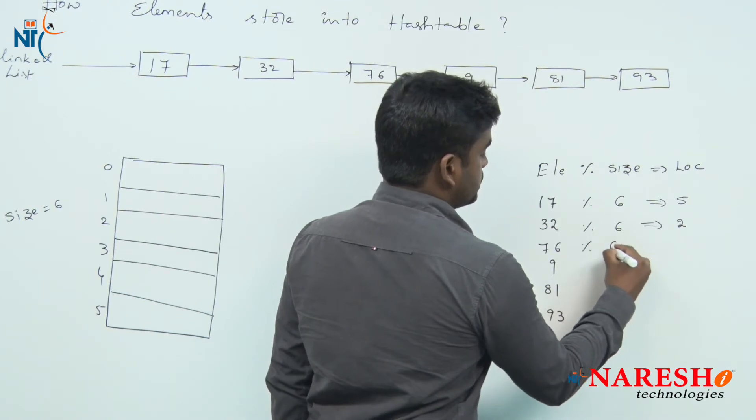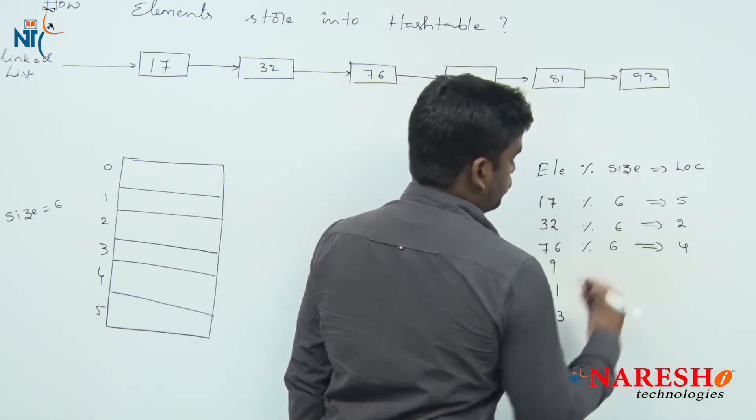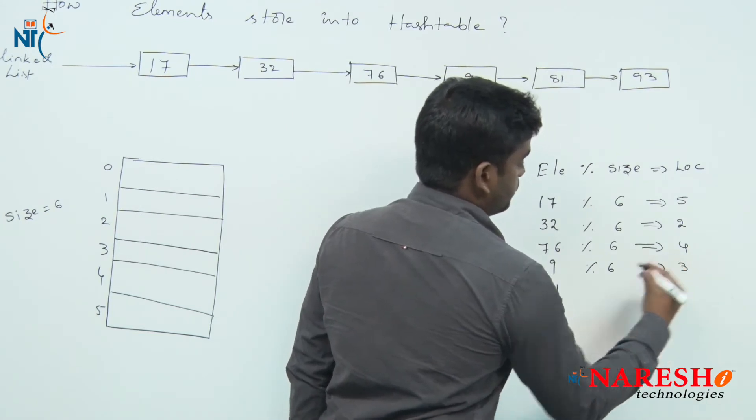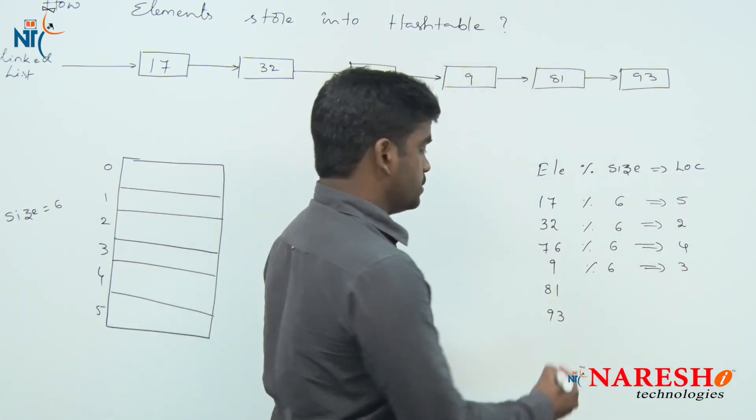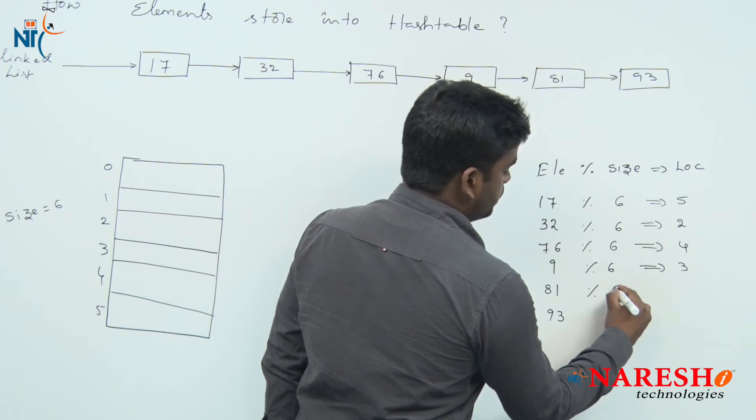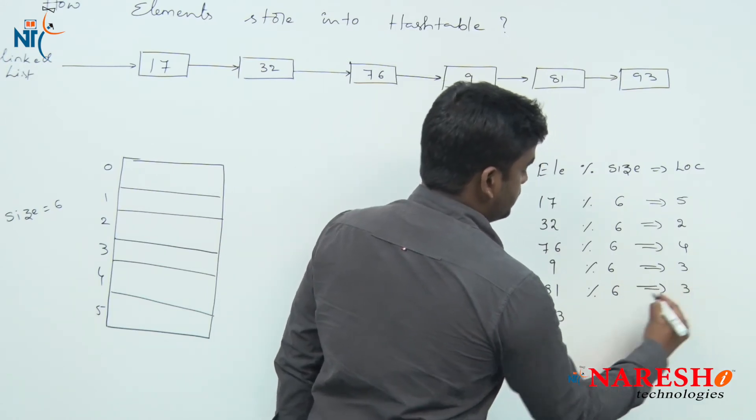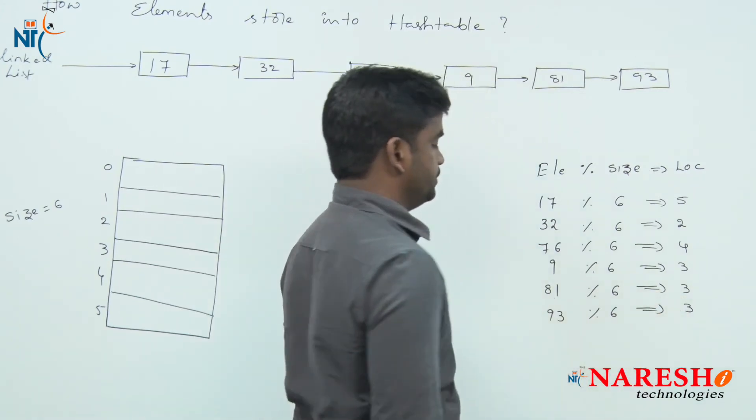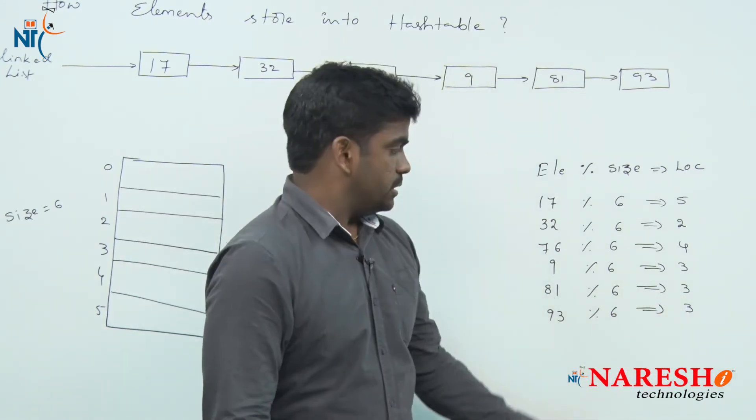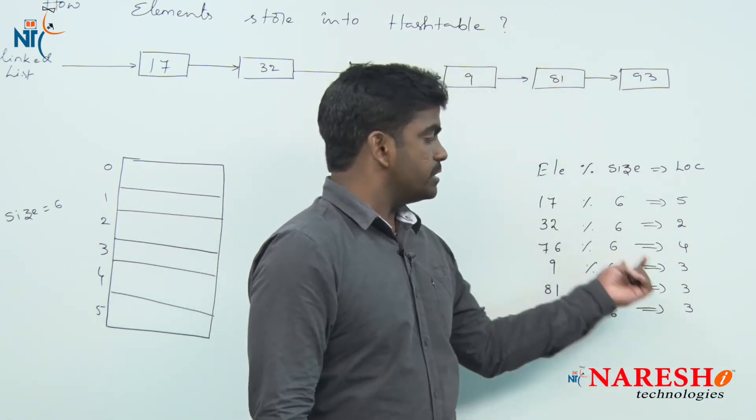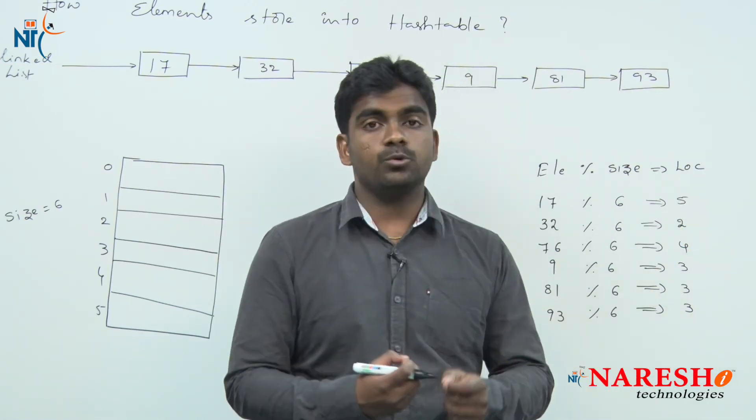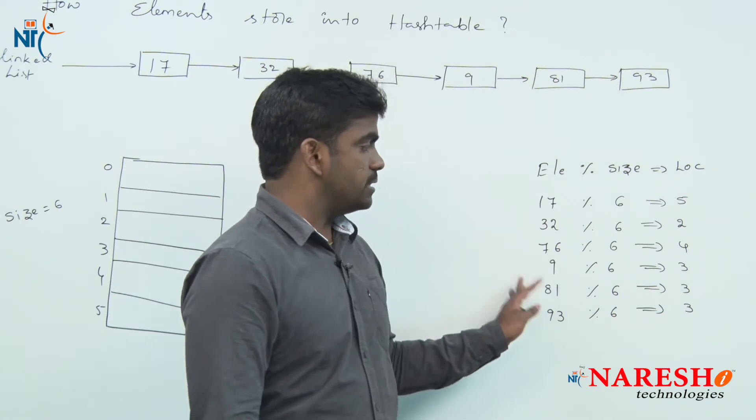76 mod 6 value is 4, 9 mod 6 value is 3, 81 mod 6 value is 3, 93 mod 6 value is 3. So, what mod operator always will give the remainder. These are the locations from where we have to connect these elements in the hash table.